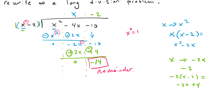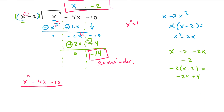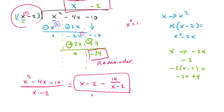So we can write out our solution. Let's rewrite the whole thing. x squared minus 4x minus 10 divided by x minus 2 equals x minus 2 minus 14. Since we have a remainder, we always put the remainder over whatever the divisor is. So negative 14 over x minus 2. And this is our answer.